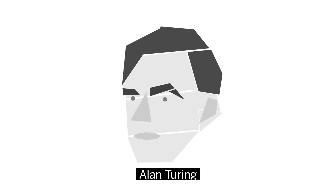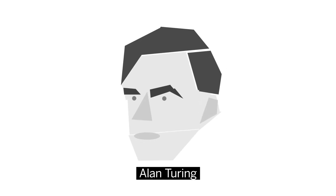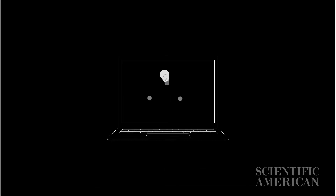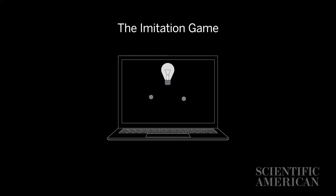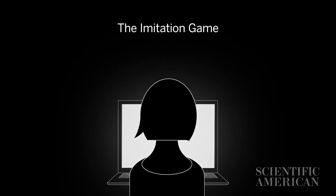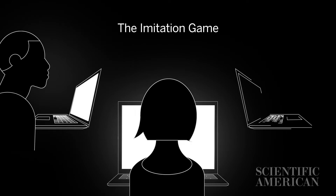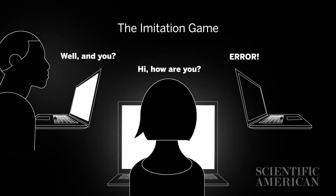In 1950, mathematician Alan Turing argued that it's a waste of time to ask whether machines can think. Instead, he proposed a game. A player has two written conversations — one with another human and one with a machine. Based on the exchanges, the human has to decide which is which. This imitation game would serve as a test for artificial intelligence.